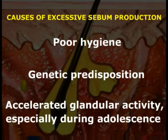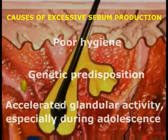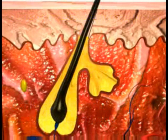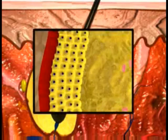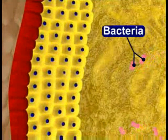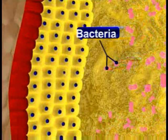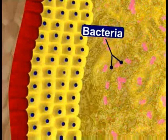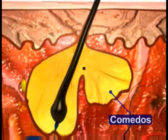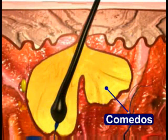During an acne breakout, the pore of the hair follicle is plugged by a mixture of sebum and cells that line the hair follicle. The trapped sebum allows bacteria to grow in the plugged follicles, forming the primary acne lesion called a comedo.